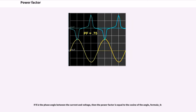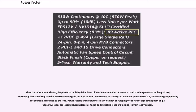If theta is the phase angle between the current and voltage, then the power factor is equal to the cosine of the angle. Since the units are consistent, the power factor is by definition a dimensionless number between minus 1 and 1.